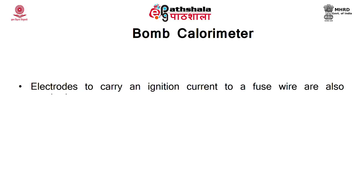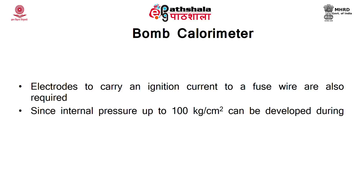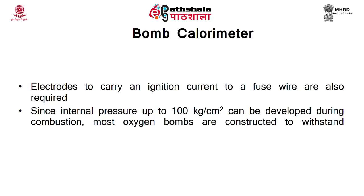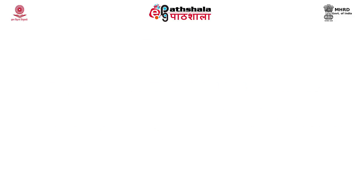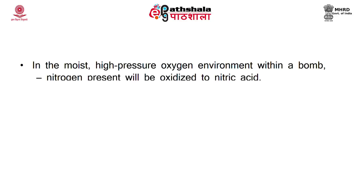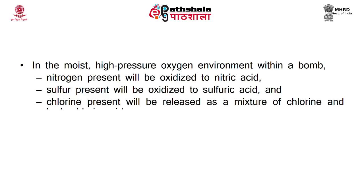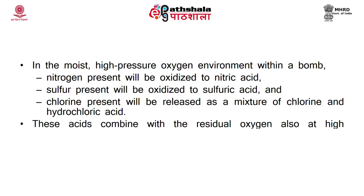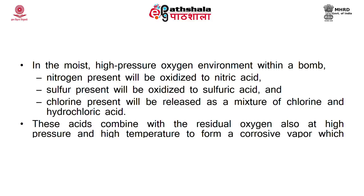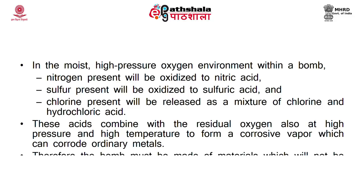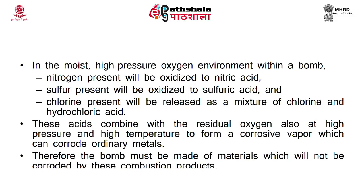Valves are provided for filling the bomb with oxygen under pressure and for releasing residual gases at completion of the experiment. Electrodes to carry ignition current to a fuse wire are also required. Since internal pressure up to 100 kg/cm² can develop during combustion, most bombs are constructed to withstand pressures up to 200 kg/cm². In the high-pressure oxygen environment within the bomb, nitrogen is oxidized to nitric acid, sulfur to sulfuric acid, and chlorine is released as a mixture of chlorine and hydrochloric acid. Therefore the bomb must be made of materials not corroded by these combustion products.